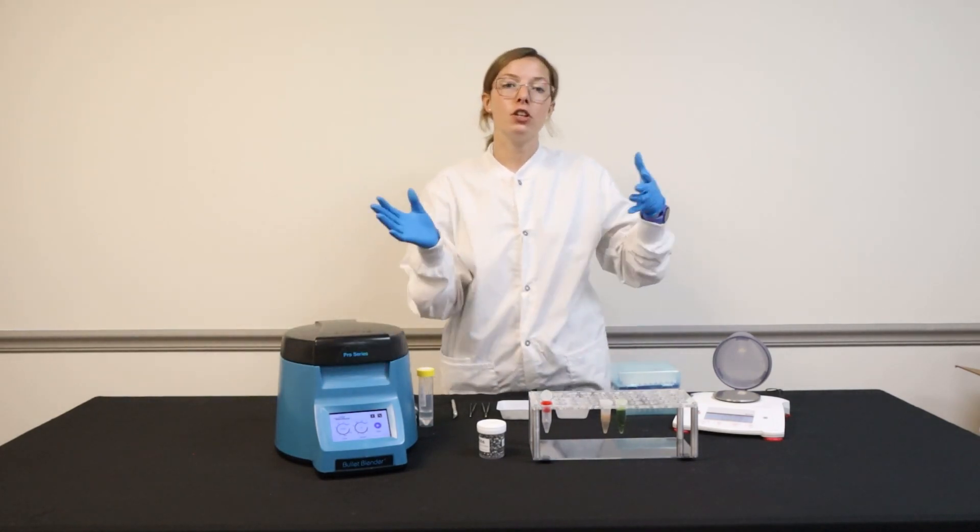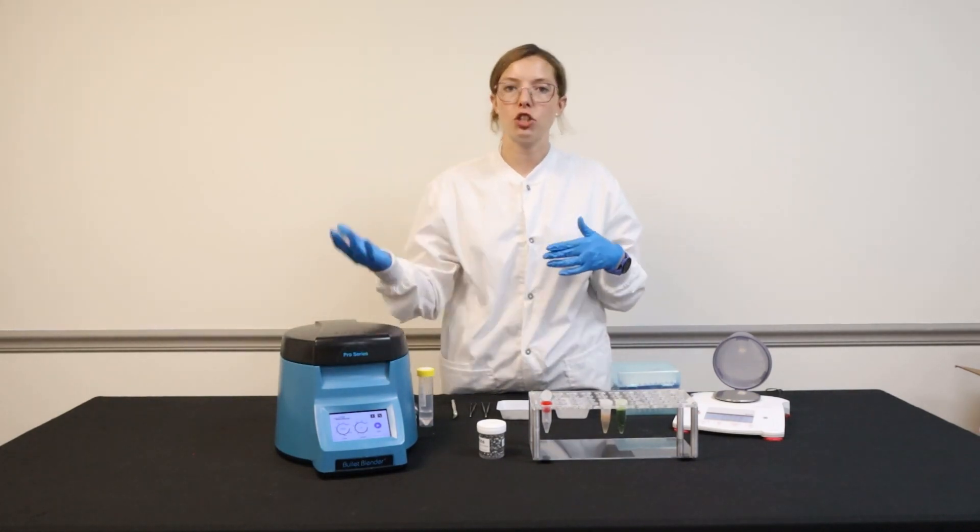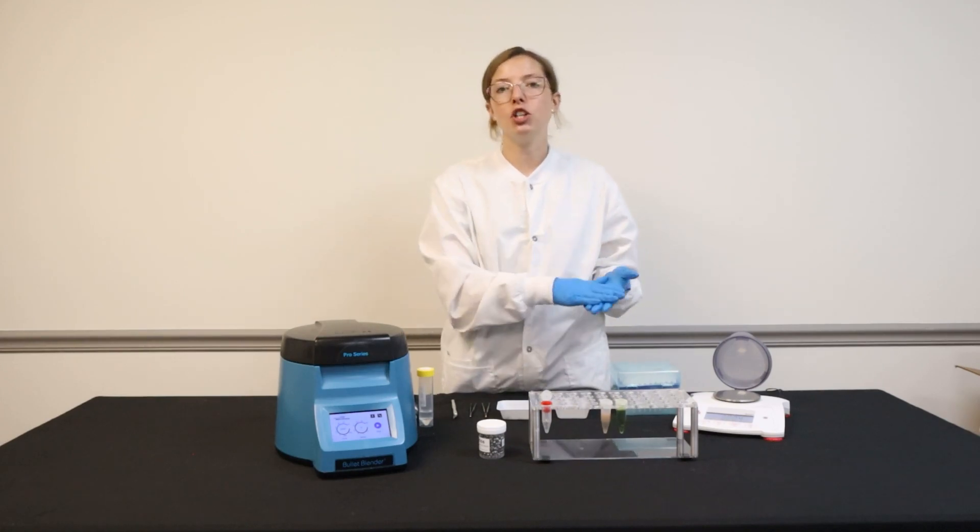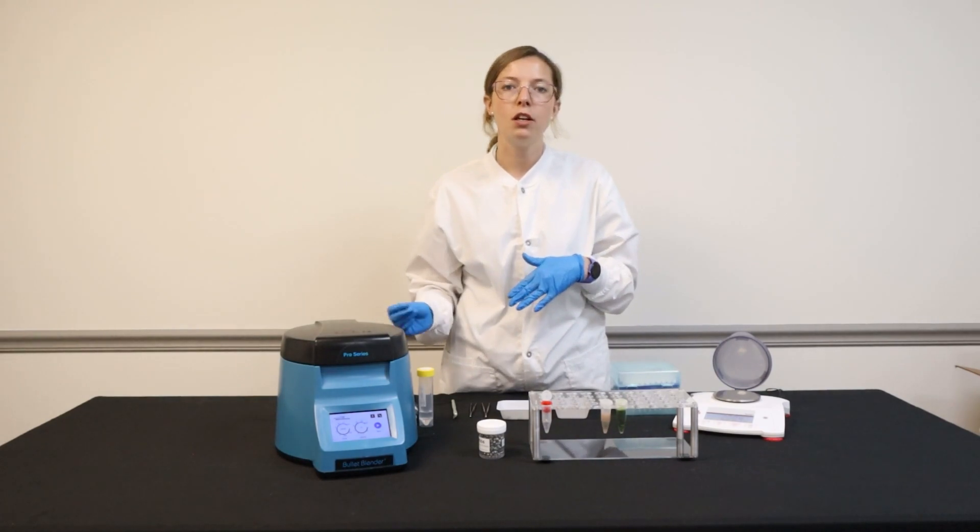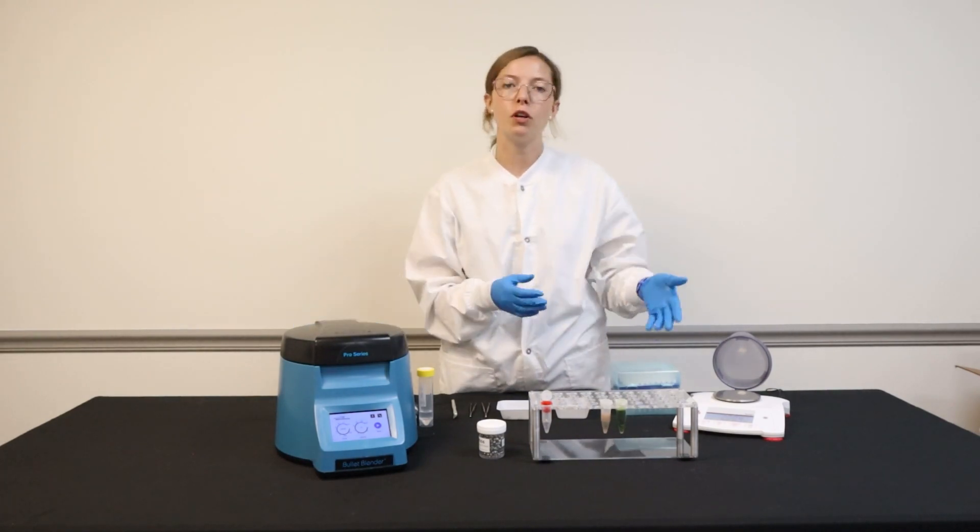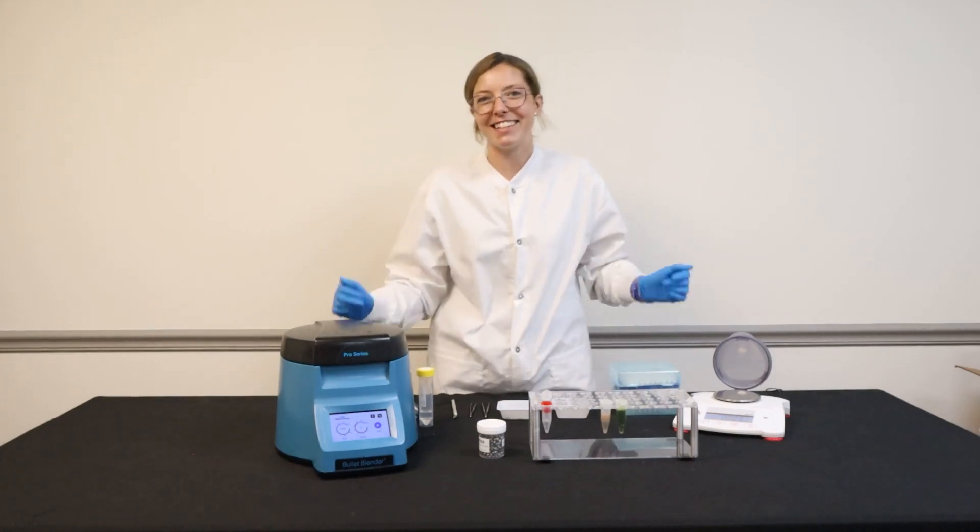Depending on your downstream application, you can either centrifuge the samples now to extract the clarified supernatant, or you can just extract the whole homogenate and place it in a clean tube. You can store it in the freezer or you can move directly to the next stage of your protocol. It's that easy.